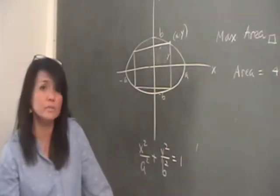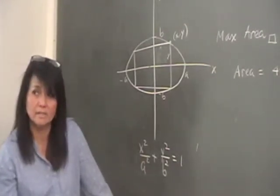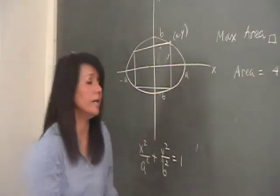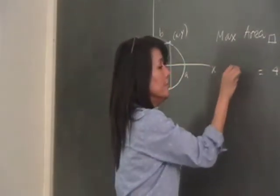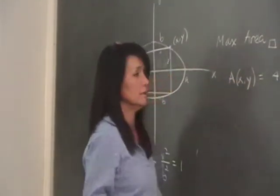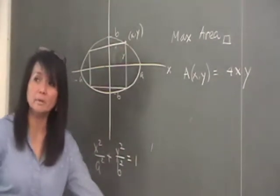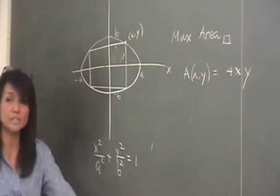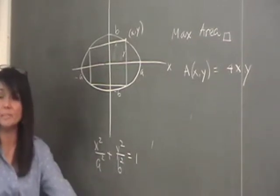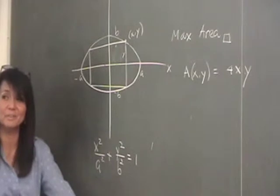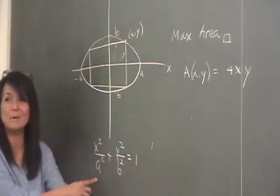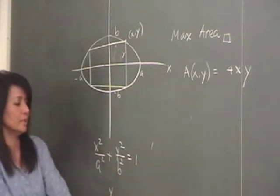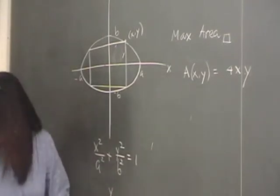Now the problem is we're only in Calculus 2. We don't know Calculus 3 yet. So what does that mean? We need to kick out one variable. Right now, this area is really a function of how many variables? Two. We need to kick out one variable. We can do this in Calc 3 but not in Calc 2. So we need to kick out one variable. How do we kick out one variable? You have to find the relationship between X and Y. And I'm claiming that the relationship is sitting right here, just staring at you. The relationship between X and Y is here.